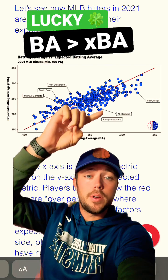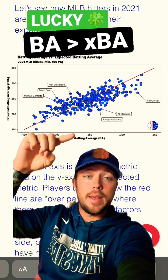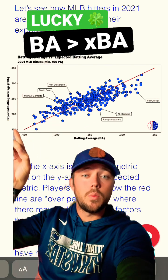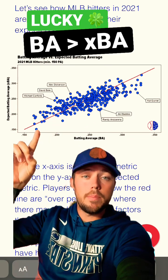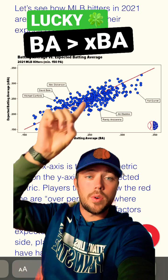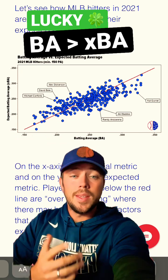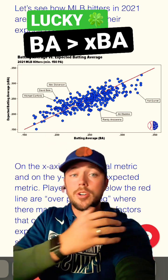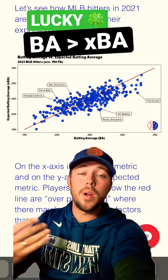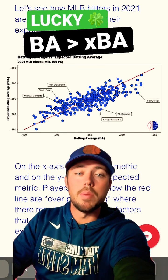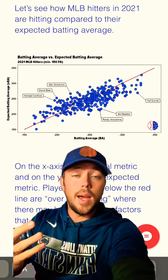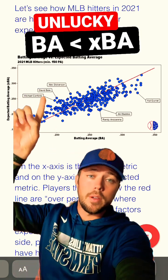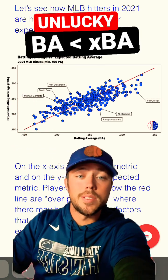For example, Akil Badu's batting average is higher than what his expected one would be. We know that because it's under this red line. He's considered a lucky hitter because his actual batting average is better than what is expected. The opposite is true for a guy like David Bodie from the 2021 season.